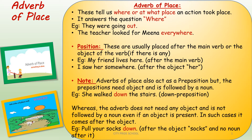Position of adverb of place: the adverb of place is placed after an object in a sentence. So if a sentence has an object, it will be placed after the object. But since not all sentences have an object, in such cases we put it after the main verb. In the example 'they were going out,' there is no object, so 'out' is placed after the main verb. But in 'the teacher looked for Mina everywhere,' we do have an object — Mina — and that is why 'everywhere' is placed after the object.